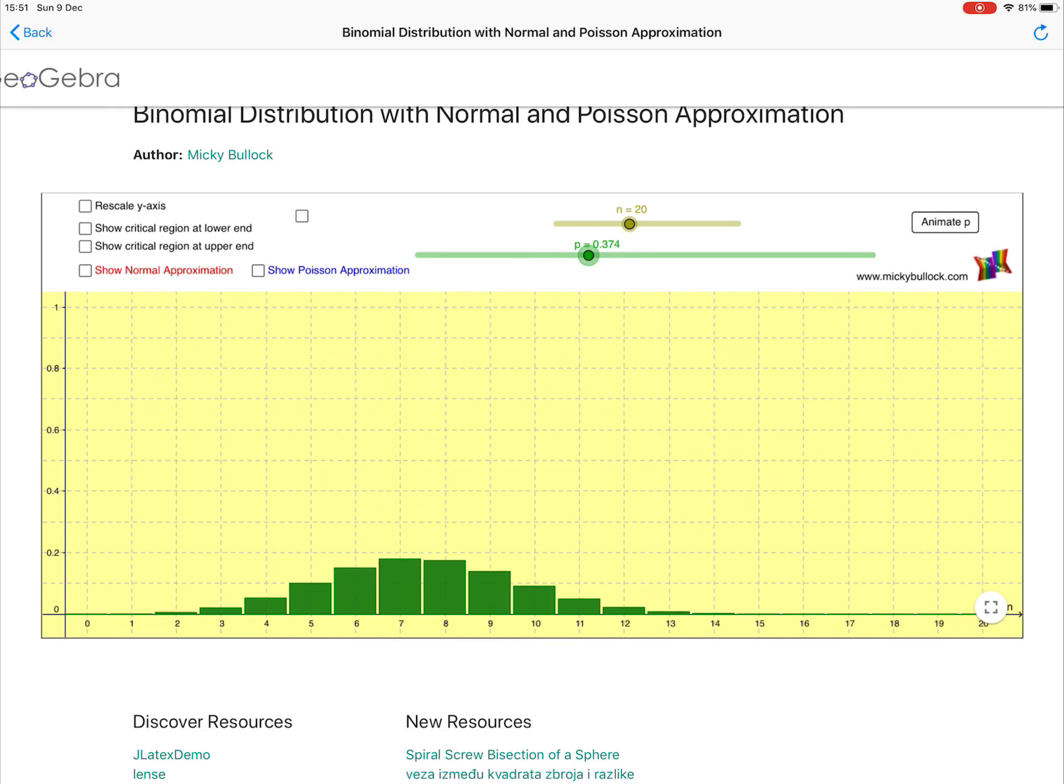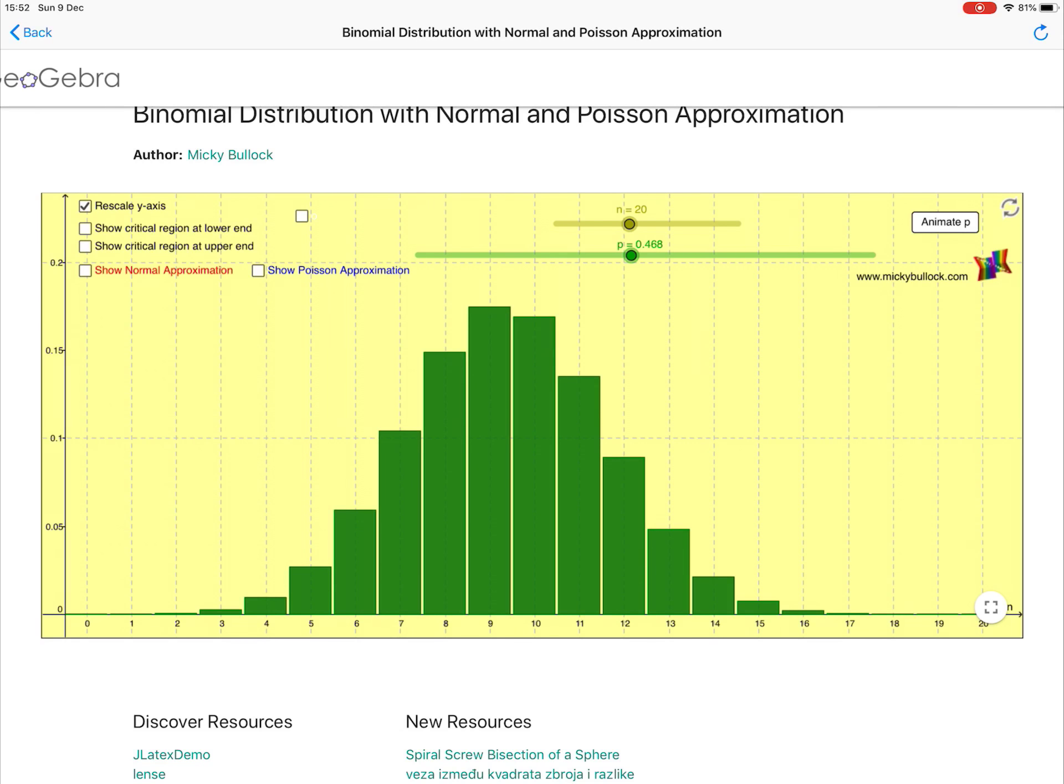If I drag the probability down a little bit, just the shape of the distribution changes. I can put it all the way to the end, so if the probability is 0, then you've got a 100% chance of getting 0 successes, and obviously all the other probabilities are 0. Now I can drag it all the way to the other end, and we get something that's an exact mirror of that. Somewhere in the middle, for example.